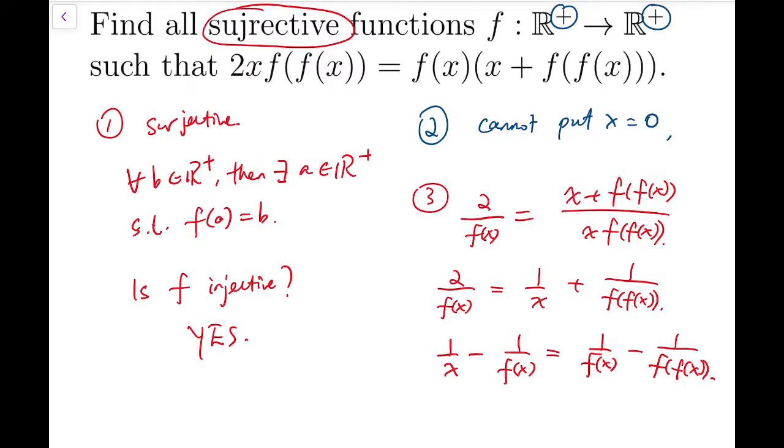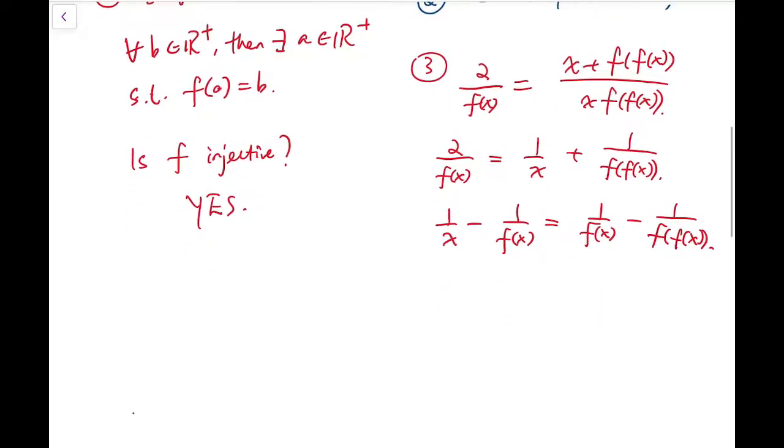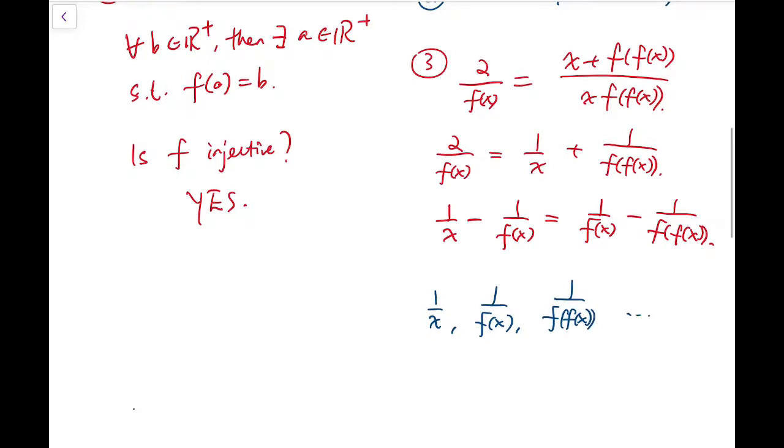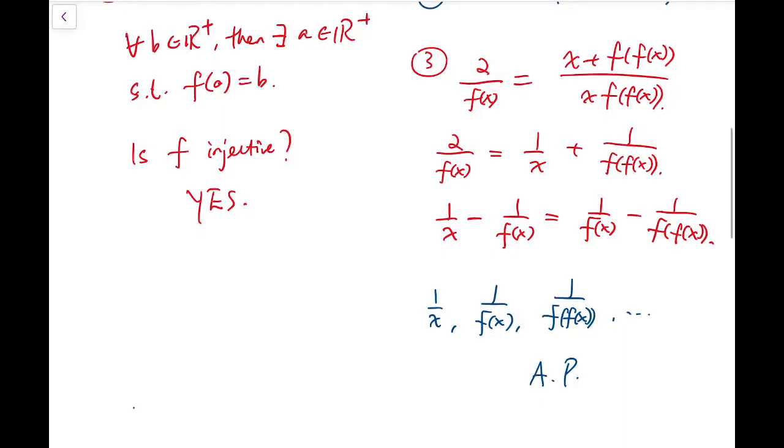And this very much looks like arithmetic progression. If we define the sequence as 1/x, 1/f(x), 1/f(f(x)), and so on, by keep mapping the previous terms into the function to generate the next term of the sequence. And this is an arithmetic progression. So, having these things on the table, now we can move on to the full solution.